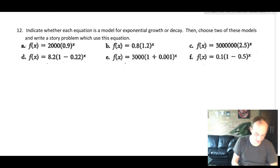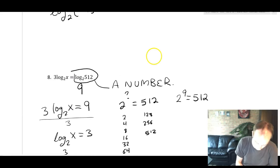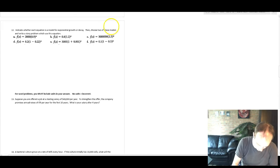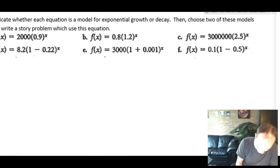All right, welcome back. So picking up where we left off at number 12, this is saying whether indicate whether each problem is a model for exponential growth or decay. Let's color code this a little bit. So growth is a nice happy thing.